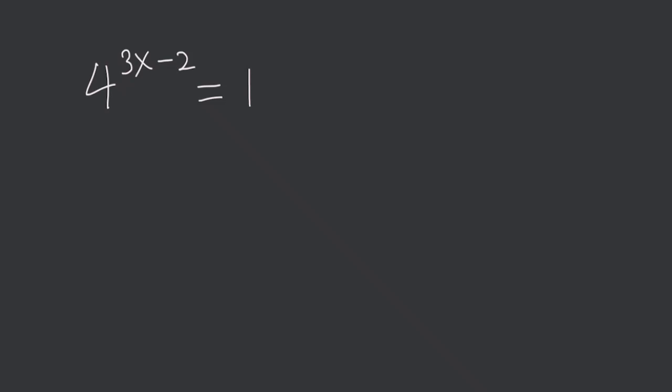Here I will show you how to quickly solve this for x. We have 4 to the 3x minus 2 is equal to 1. Now the x is in the exponent.